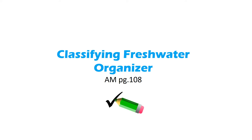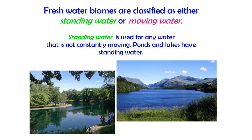All right my friends, first thing: classifying freshwater organizer. Last week we talked about freshwater biomes as either having standing water or moving water. These two pictures here — on the left is a pond and on the right is a lake. They both have standing water. It's not going anywhere and it's not moving constantly.